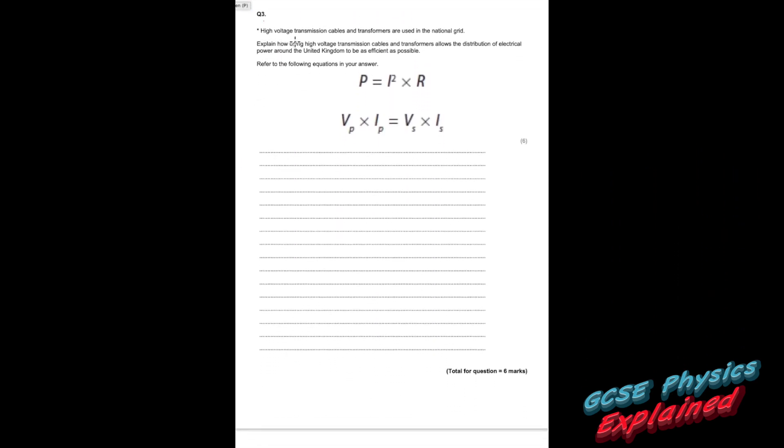Question three. High voltage transmission cables and transformers are used in the national grid. Explain how using high voltage transmission cables and transformers allow the distribution of electrical power around the United Kingdom to be as efficient as possible. Refer to the following equations in your answer. So this is all to do with the national grid. Just in case you can't remember too much about the national grid, let us show you what's happening. I'll draw a little picture.